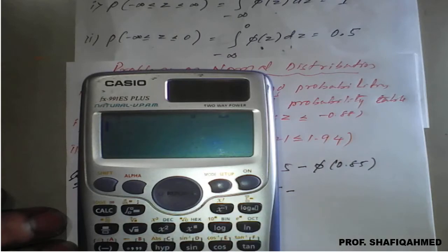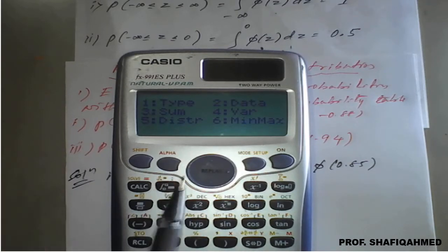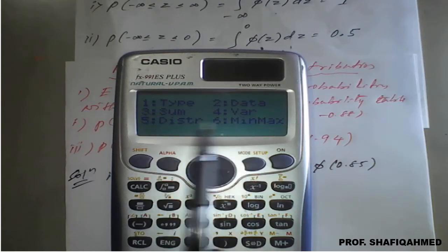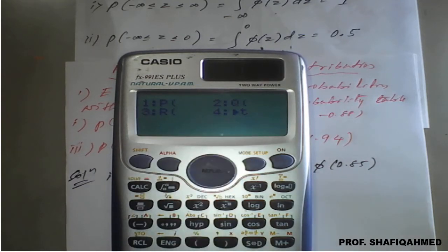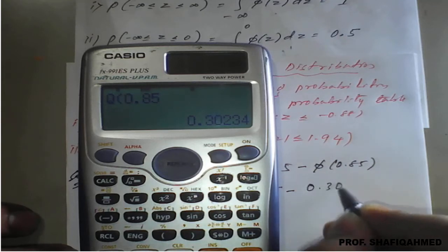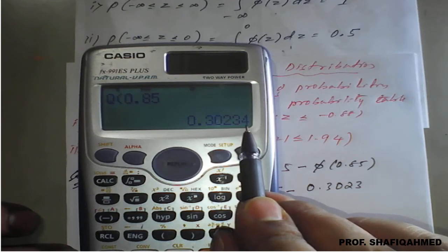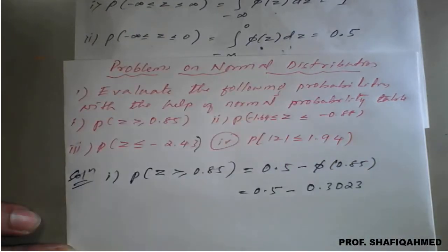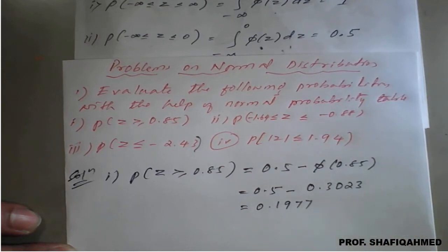Take the calculator. Set the mode to STAT (option 3), press Escape, AC, then Shift 1. You will find options including distribution. Select option 5 for distribution, then option 2 for Q of bracket. Enter phi(0.85) — press 0.85 equals — and the result is 0.3023. Subtracting: 0.5 minus 0.3023 gives the answer 0.1977. This is the first result.